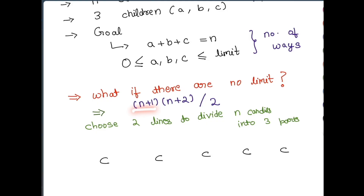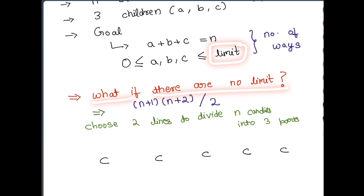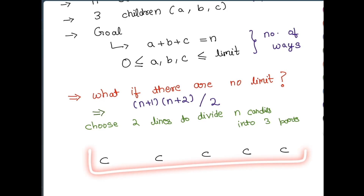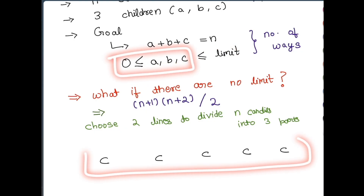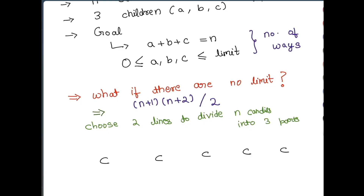I have a formula: (n+1) * (n+2) / 2. I will explain how we arrive at this formula. First, what if there is no limit? If we have no limit on how many candies we can give to one child — say we have 5 candies — then a, b, and c just need to be greater than or equal to zero with no upper bound. What if there is just one child? You just give all 5 candies to the first child.